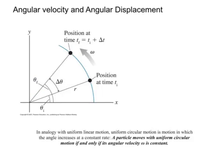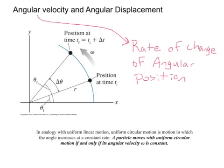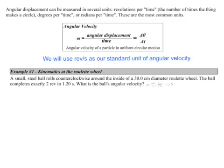An object that is undergoing circular motion has an angular velocity and undergoes an angular displacement. Angular velocity is the rate at which a particle's angular position is changing as it rotates around a circle. In analogy with uniform linear motion, uniform circular motion is motion in which the angle increases at a constant rate. A particle moves with uniform circular motion if and only if its angular velocity is constant. Angular displacement can be measured in several different units: revolutions per time, degrees per time, or radians per time. We'll be using primarily revolutions per second as our standard unit for angular velocity. Here's angular velocity, this is the symbol for angular velocity, it's a lowercase Greek letter omega, so it's angular displacement over time.